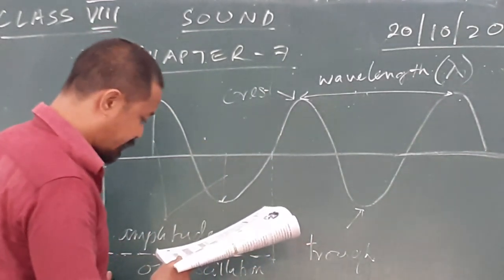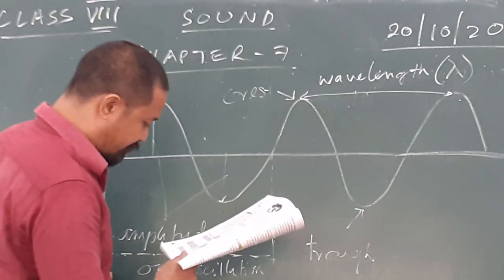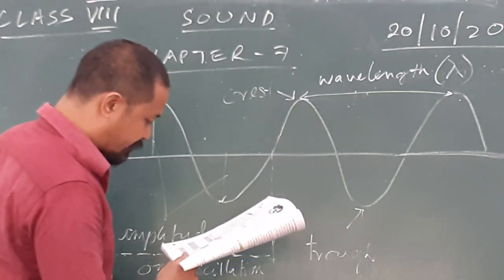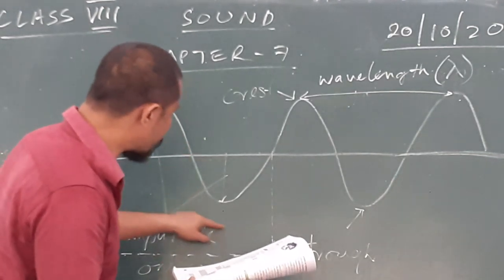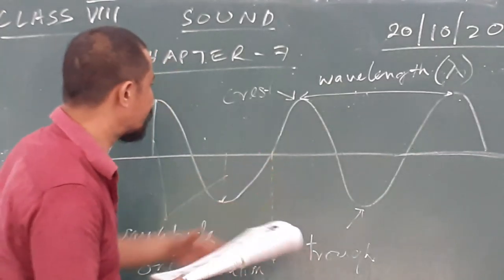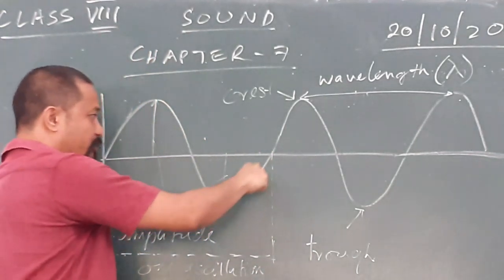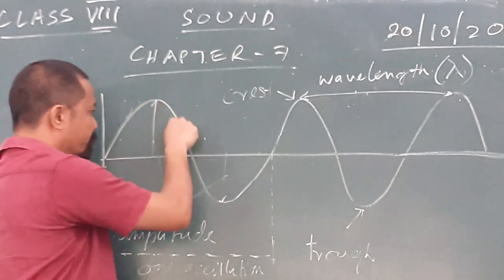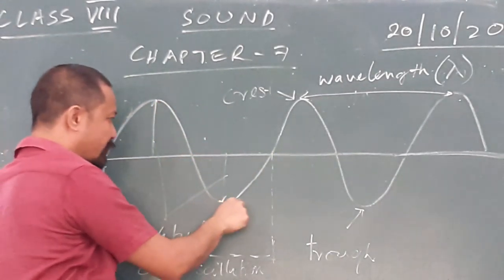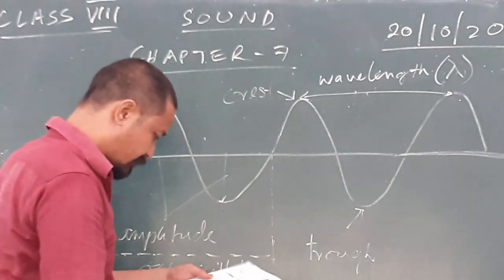Oscillation: one complete to-and-fro motion of an object or particle about its mean position is known as one complete vibration cycle or oscillation. Crest going up, trough going down — mean position up, mean position down, mean position. That is one oscillation.